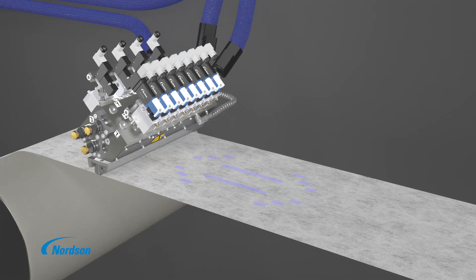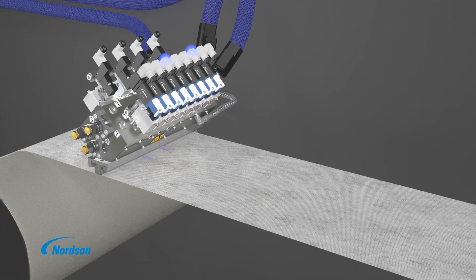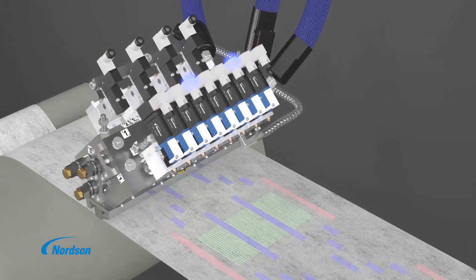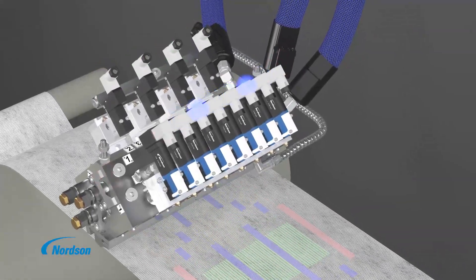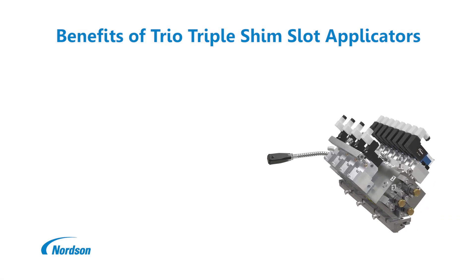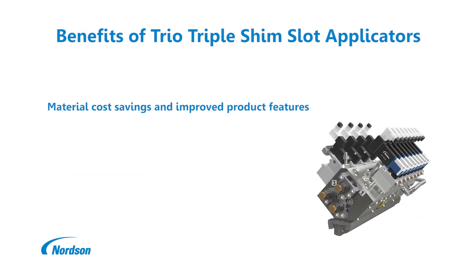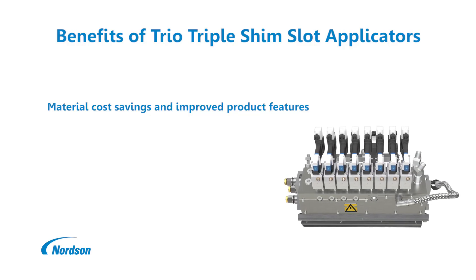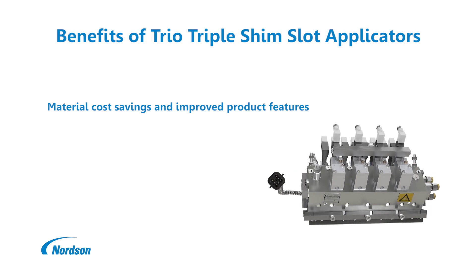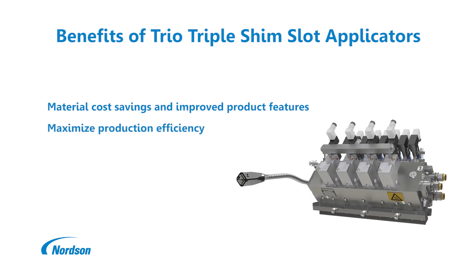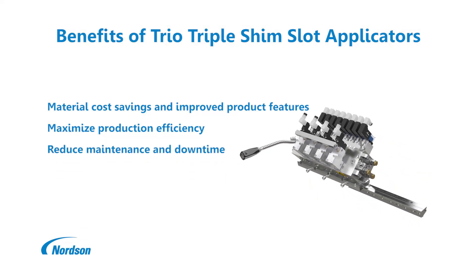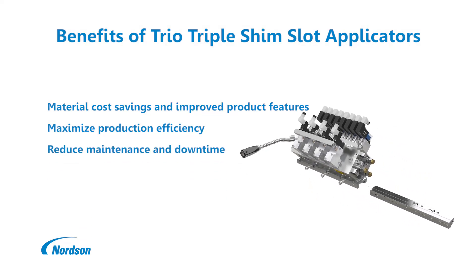Applicators, modules, and nozzles can be ordered from Nordson in a wide range of configurations to meet an endless number of pattern requirements for disposable hygiene product manufacturing. TRIO applicators offer a number of benefits, including customizable variable dispense rates for material cost savings and improved product features, robust coding process to maximize production efficiency, and long life modules and quick exchange components to minimize downtime and reduce maintenance.